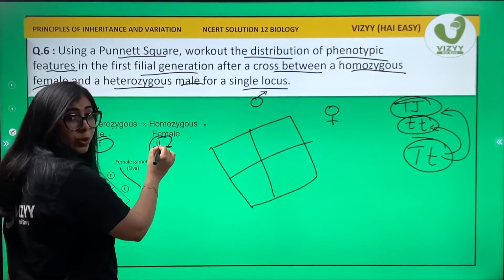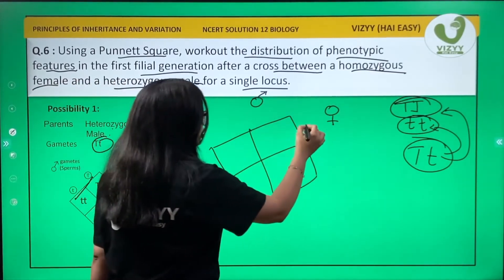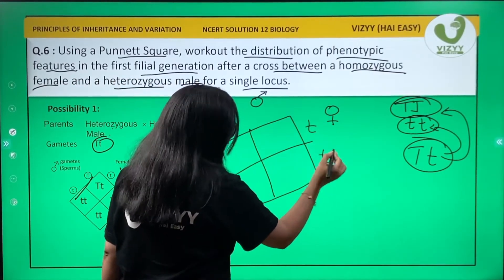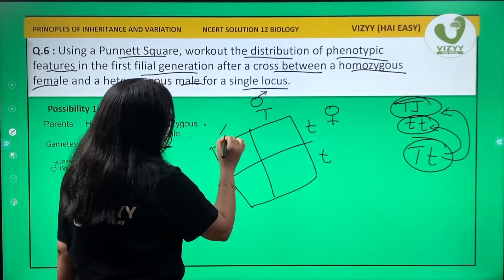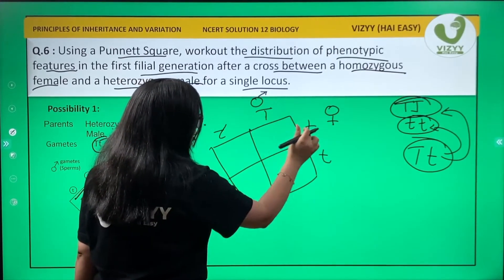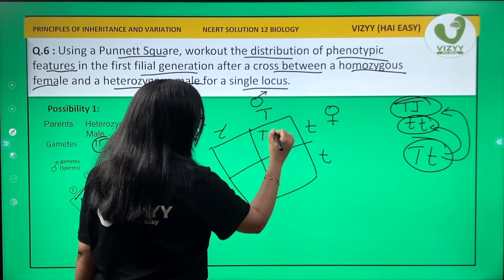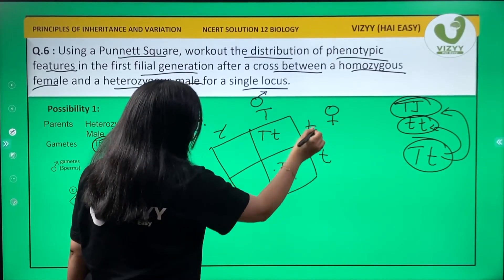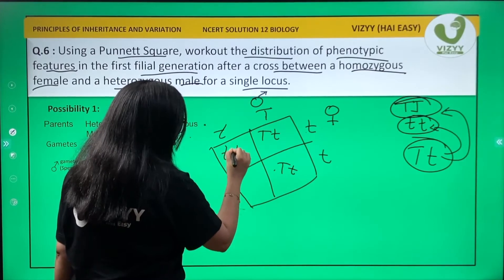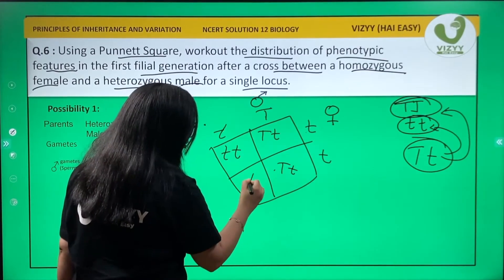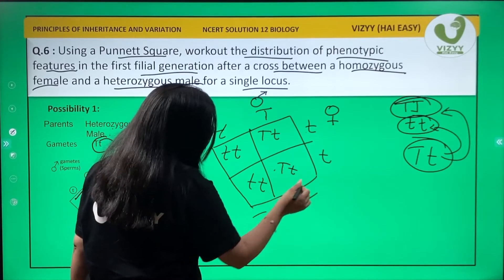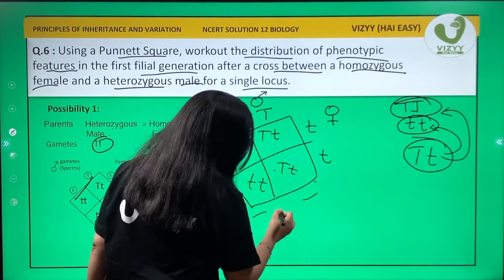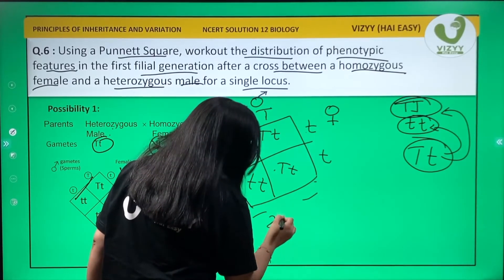Female is homozygous recessive, so tt. Male is heterozygous, so Tt. This T with this t gives tall, again tall. This t with this t gives dwarf and dwarf. This is equal in proportion, so the ratio is 2:2 or 1:1.